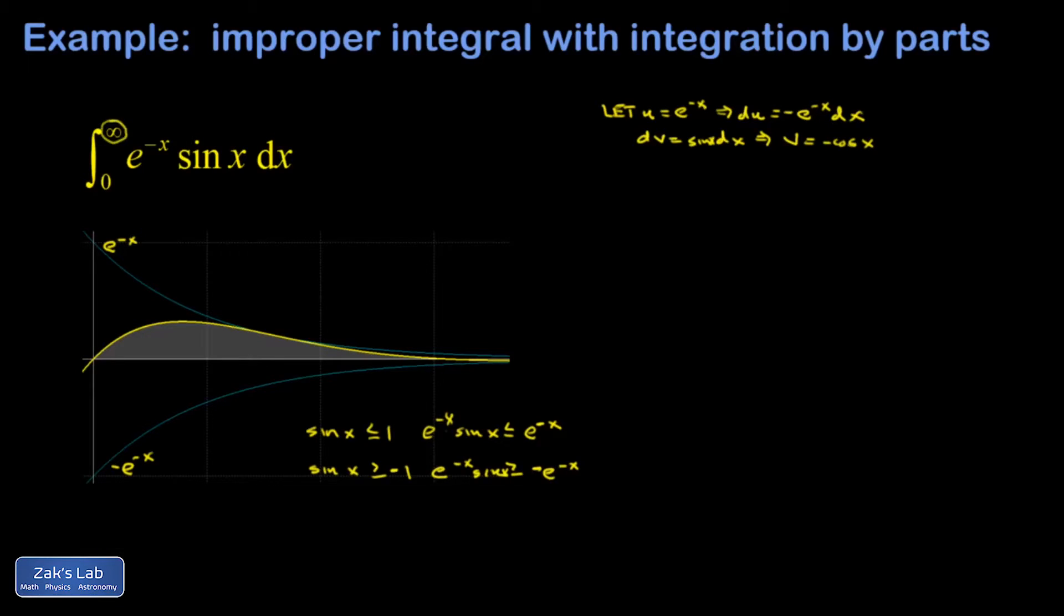So my integral has now been transformed. I'll just call it I, so I can be sort of notationally correct. So I = uv, that's -e^(-x) cos x evaluated from 0 to ∞, minus the integral of v du.